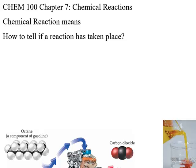Chapter 7 is all about chemical reactions. And we know that a chemical reaction means at least one new substance has been made as a result of the reaction.